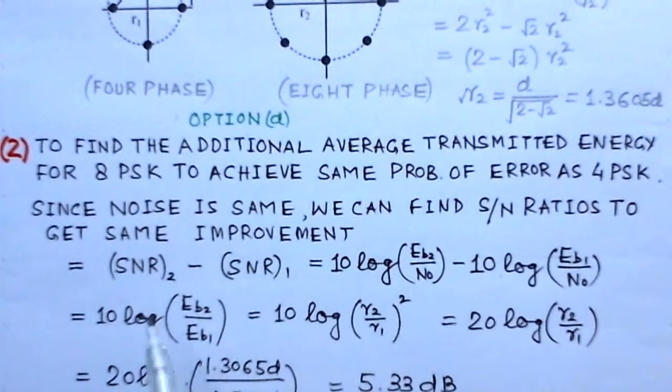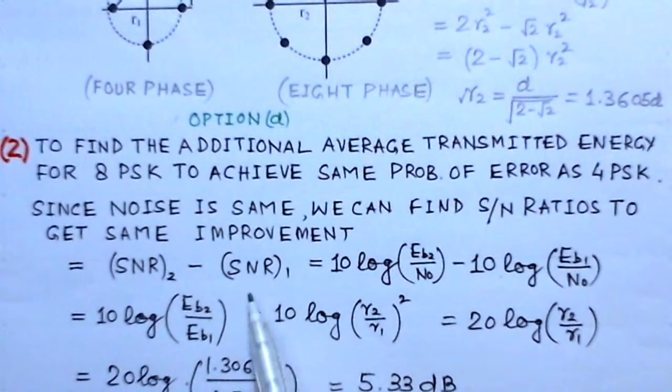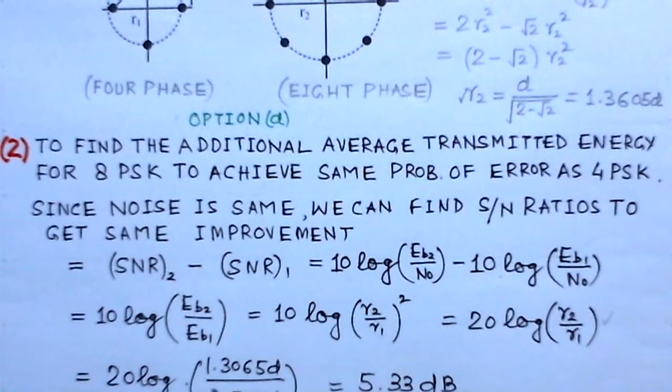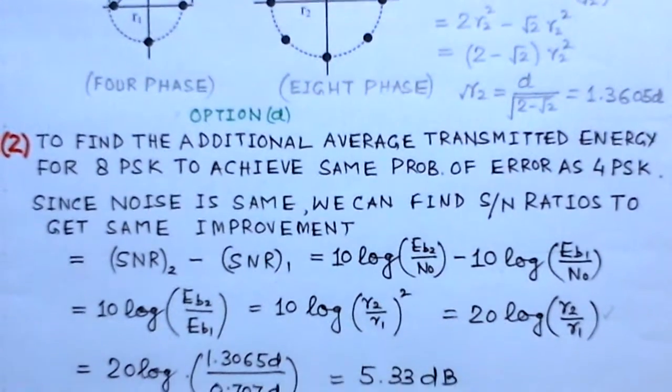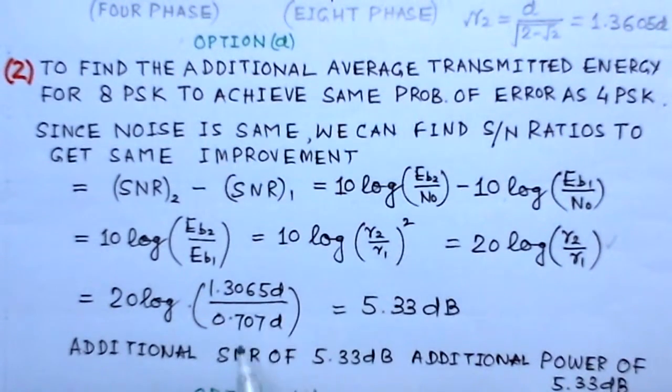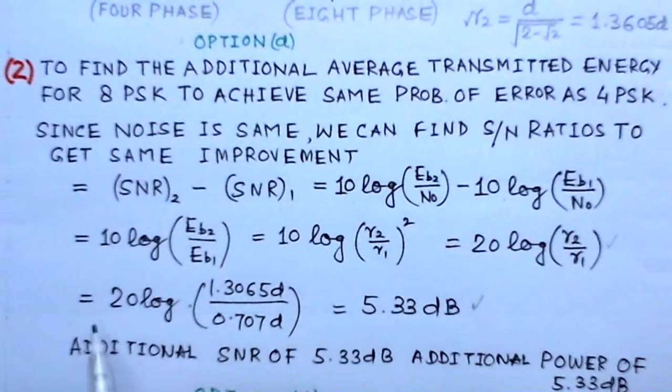SNR2 minus SNR1 equals 10 log Eb2 over N0 minus 10 log Eb1 over N0, which equals 10 log (r2 over r1) whole square. This is 20 log r2 over r1. If you substitute the values for r2 and r1 here, we get 20 log (1.306d divided by 0.707d).